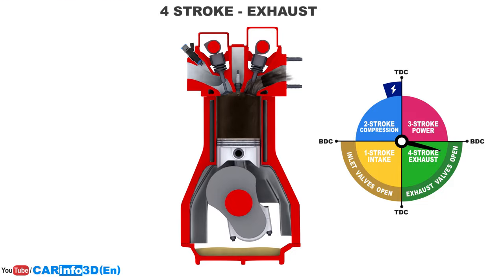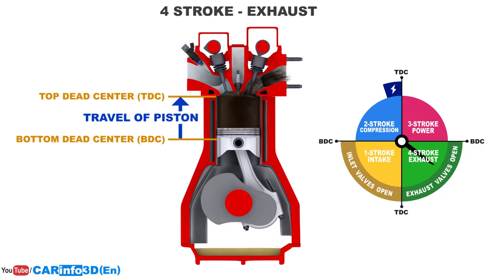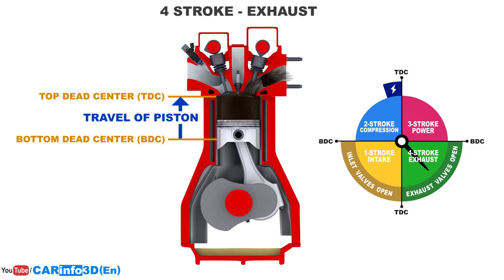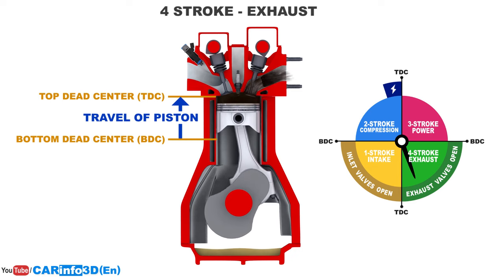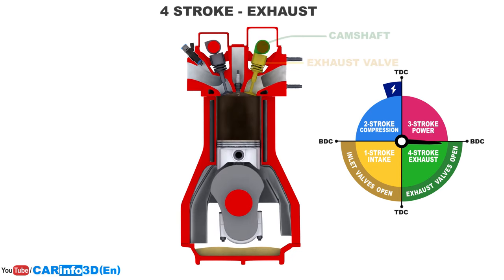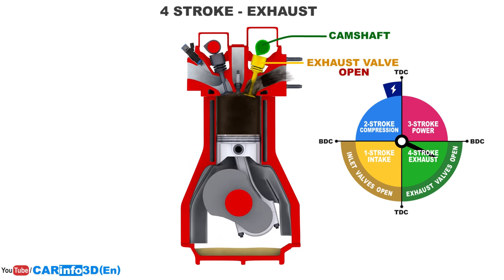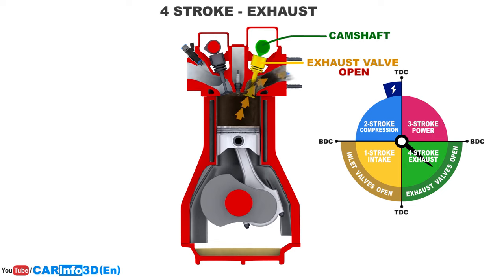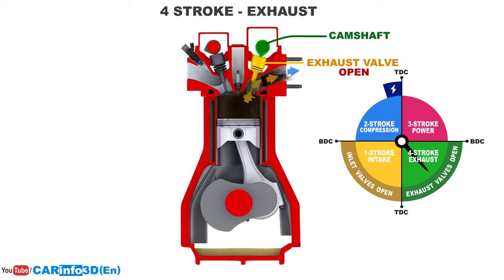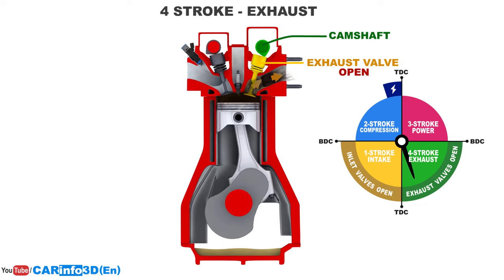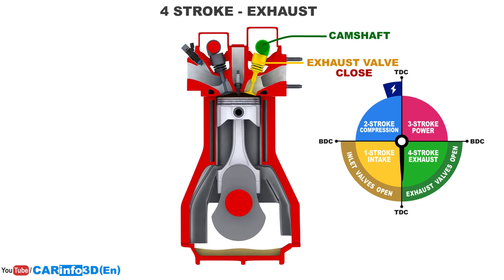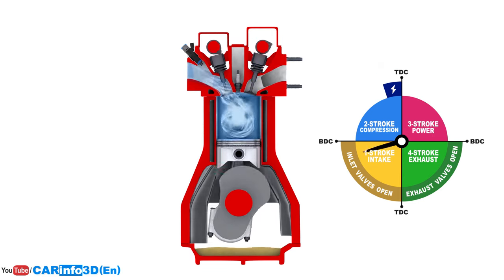The fourth stroke starts at bottom dead center and ends at top dead center. The camshaft opens the exhaust valves and the piston expels the exhaust gases from the cylinder. When the piston approaches top dead center, the exhaust valves close, completing the last stroke and the entire operation cycle. The operation cycle is then repeated.